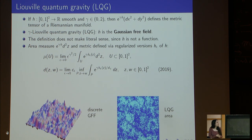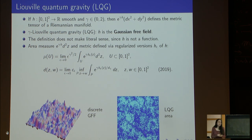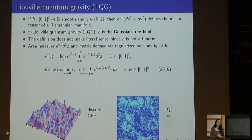It is also possible to construct a metric by a similar construction: the distance between two points is defined by integrating e to the power of a constant multiple of the Gaussian free field along paths and taking the infimum over all paths. The construction of the area measure is a very classical result going back to the 1970s and 80s, but the construction of the metric was completed very recently — it is a much harder problem because it involves optimizing over all paths.